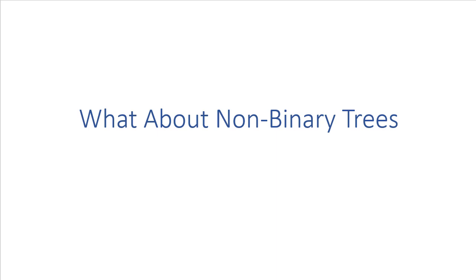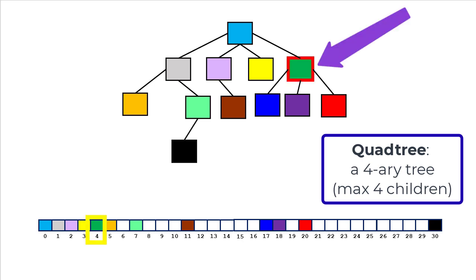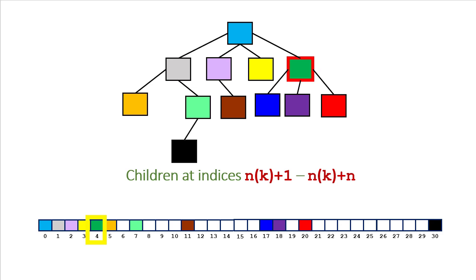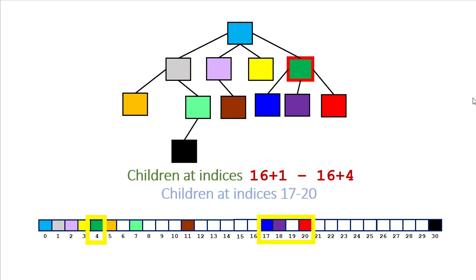This approach also works for any n-ary tree, where n is the order of the tree — the maximum number of children any node can have. The children of a node at index k are stored between indices n times k plus one and n times k plus n. For a quad tree (four-ary), with the screen node at index four, n equals four and k equals four, so its children are stored at indices seventeen through twenty. This general formula works for any tree with a fixed maximum number of children.